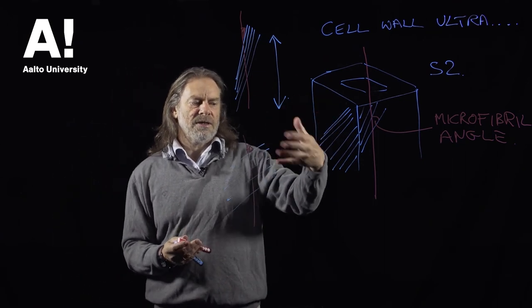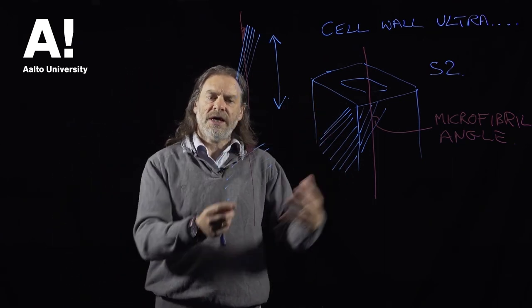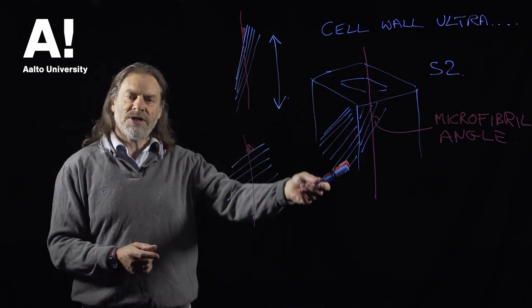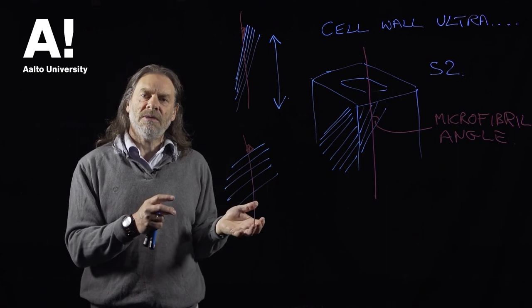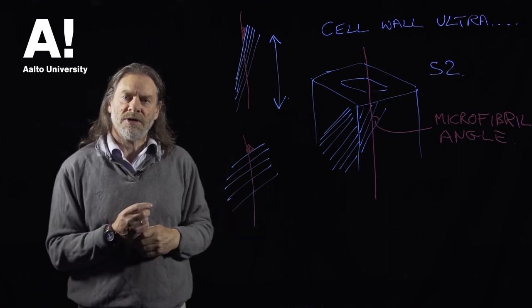So that's how cellulose is laid down in the cell wall, but between the cellulose we have the hemicelluloses and the lignin, and I'm going to tell you about what these do in the next part of this lecture.